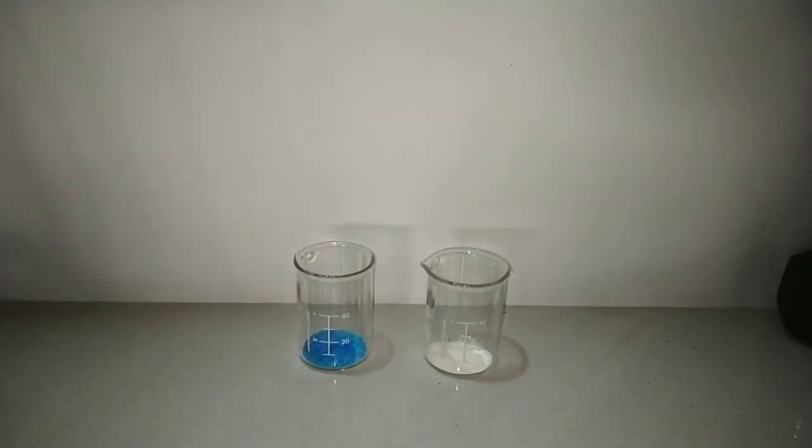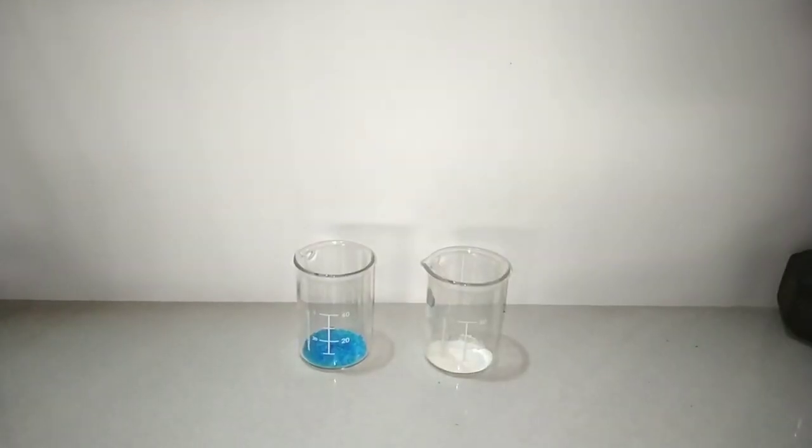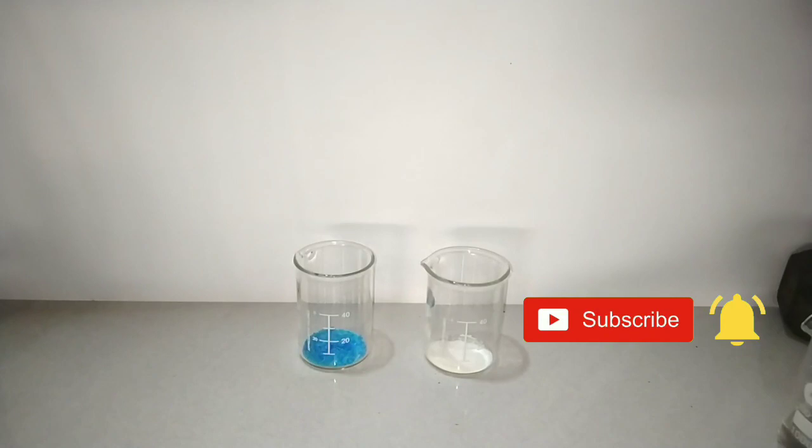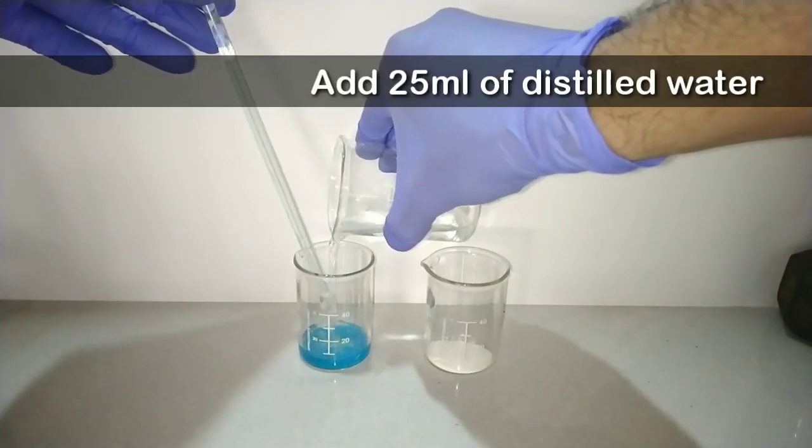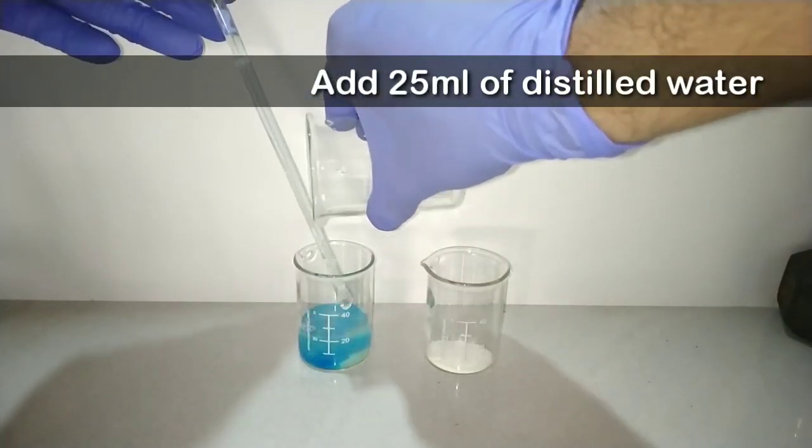Copper 2 sulfate is easily obtained as it is sold as a weedicide, and sodium metabisulfite can be purchased online—check out eBay or Amazon. Into the copper 2 sulfate add 25 milliliters of distilled water and mix it well.